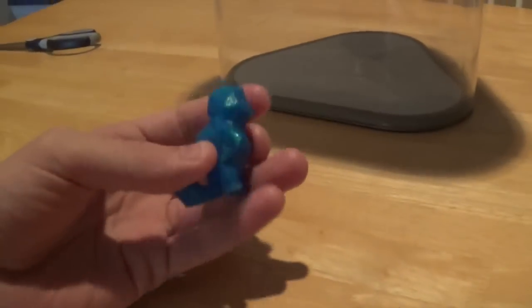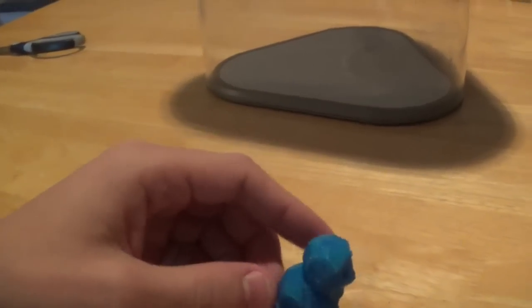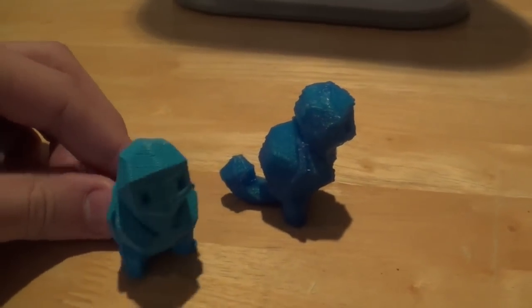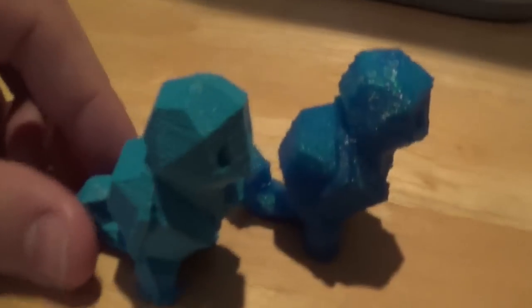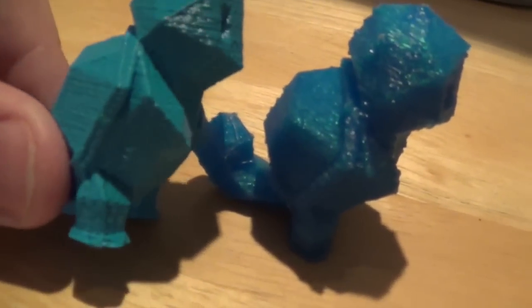For some reference I also pulled out the Squirtle that I printed on the DaVinci 2.0. As you can see it is a bit smoother. Now this is going to be ABS plastic versus the PLA.